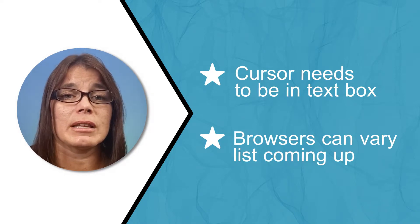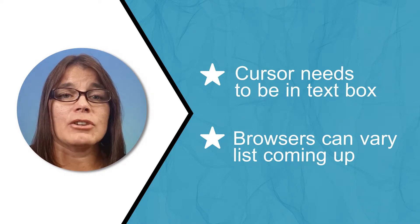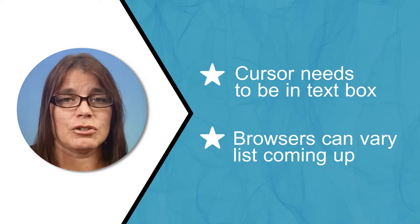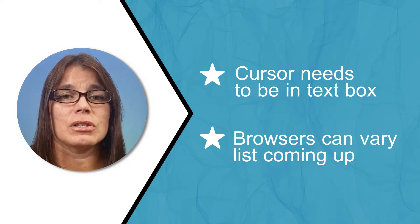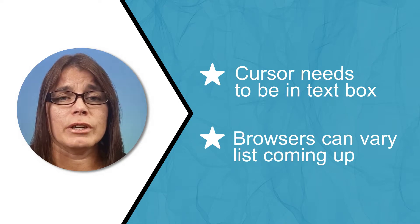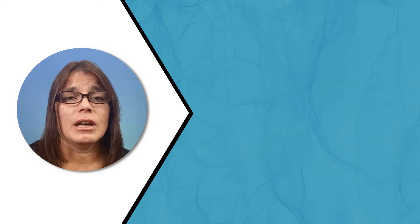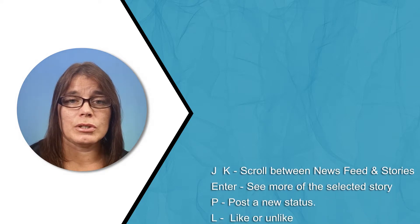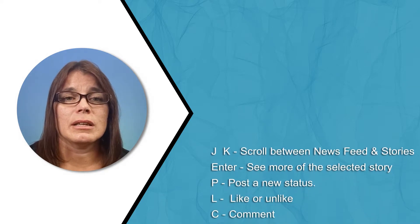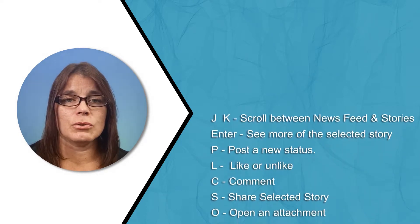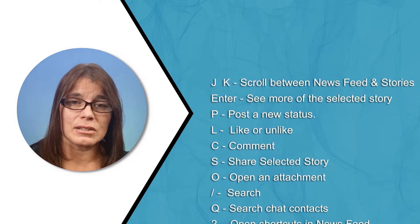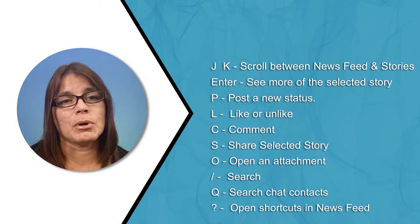We're going to talk about the one-action keyboard shortcuts first, and then we'll get to the navigation ones. These single-key shortcuts are for when you are just scrolling and reading your feed. J and K take you between the news feed and the stories. The Enter button will take you to see more of a selected story. P is for post.